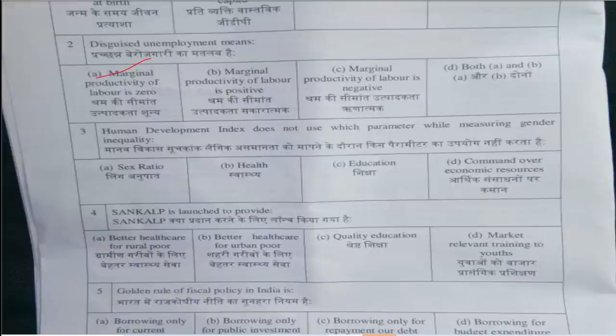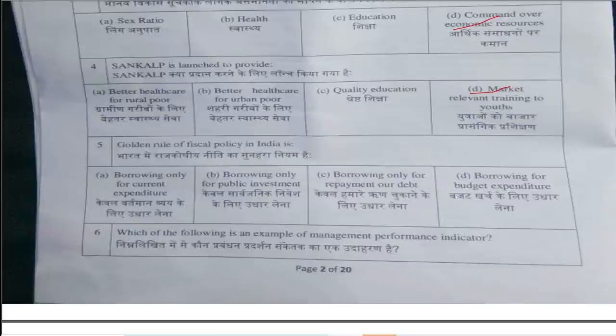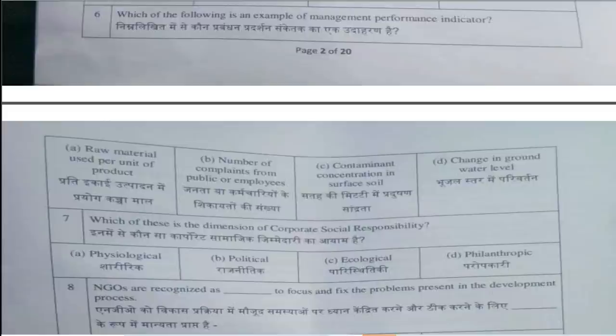Third question is: Human Development Index doesn't use which parameter while measuring gender inequality? This answer is option B, Command Over Economic Resources. Fourth question is: Sankalp is Launched to Provide? Sankalp is launched to provide market relevant training. So answer is B. Fifth question is: Golden Rule of Fiscal Policy in India is? The correct answer is option B, Borrowing Only for Public Investment.